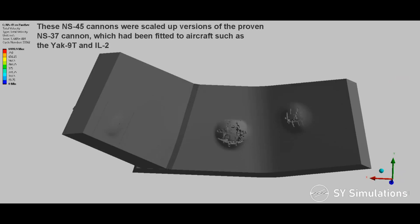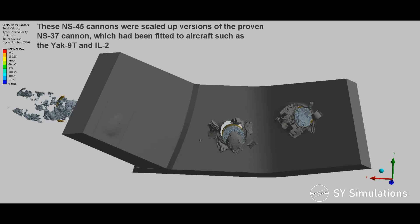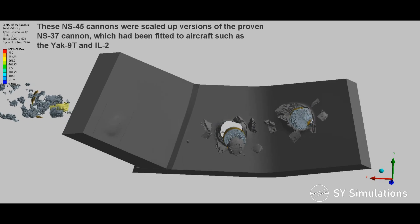These NS-45 cannons were scaled-up versions of the proven NS-37 cannon which had been fitted to aircraft such as the Yak-9T and IL-2.